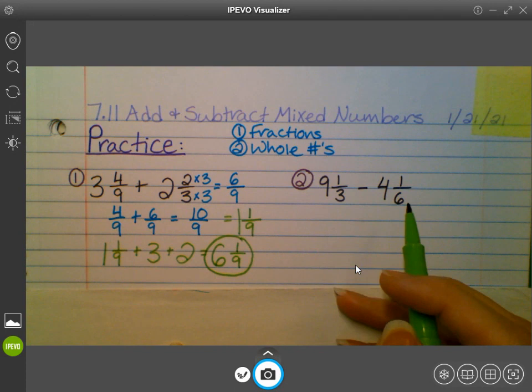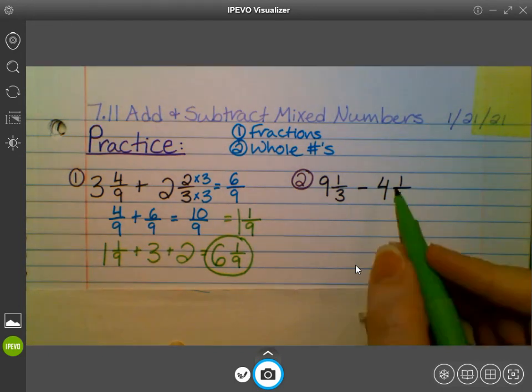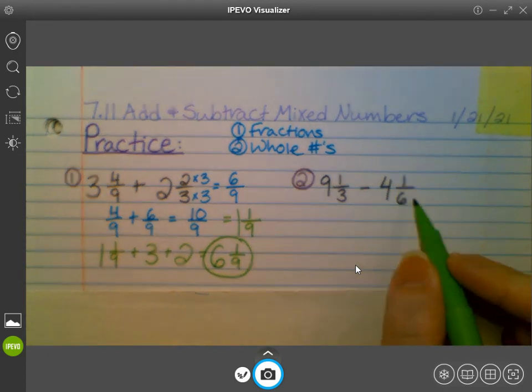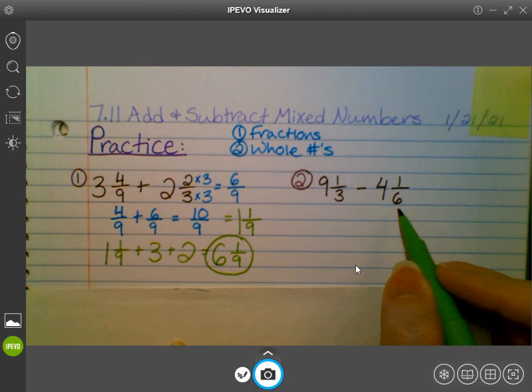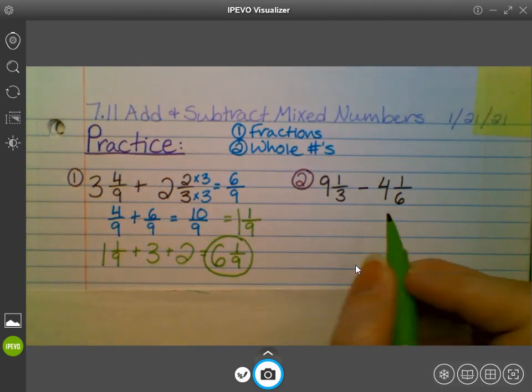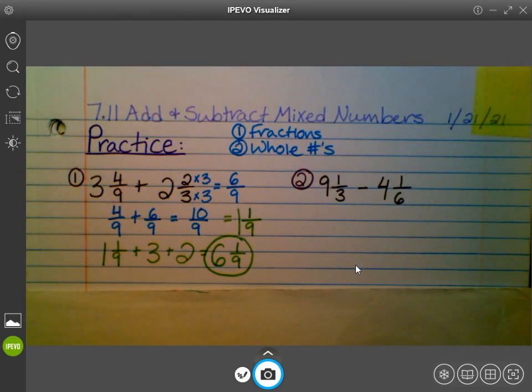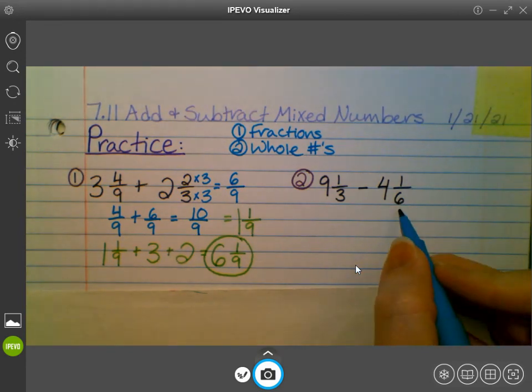But we have a 3 and a 6. So our least common denominator is a 6. Exactly. So I'm going to, since 1 6th already has 6 as a denominator, I'm going to just bring it down here. I'll use blue like I did over here. So I'm just going to bring it down.